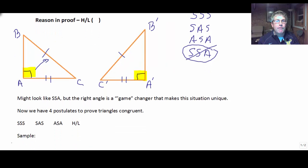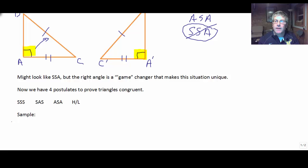So, now we have four postulates to prove triangles congruent: side-side-side, side-angle-side, angle-side-angle, and hypotenuse leg.